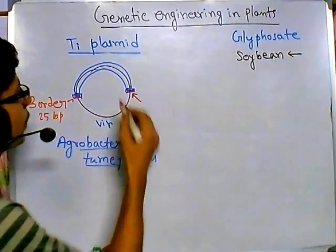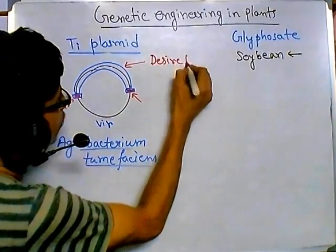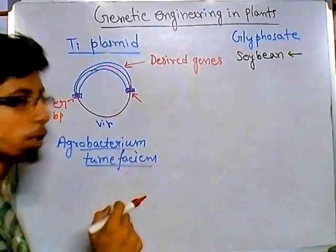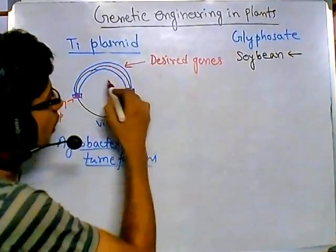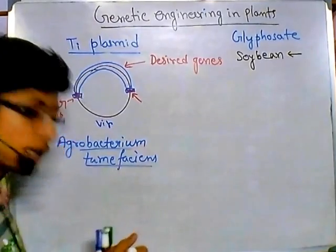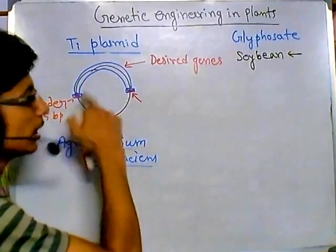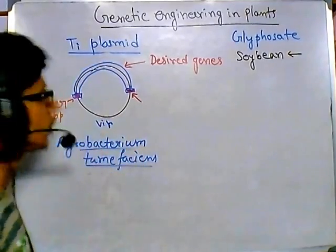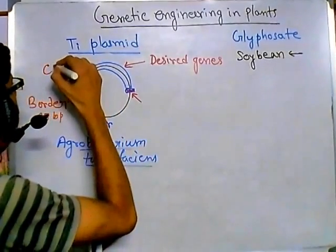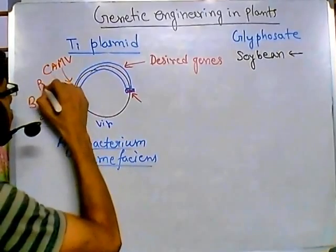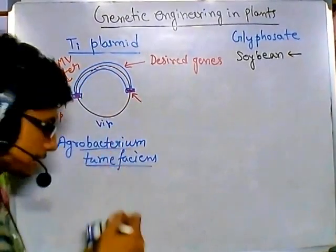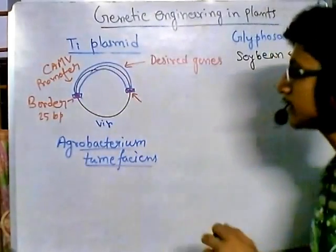Between the vir and T regions there are distinguishing regions called borders — 25 base pair sequences present on both sides. We place our desired gene between these borders. Along with the desired gene we also add a strong promoter, because we want this gene to be transcribed and translated into protein products inside a eukaryotic system like a plant. We use the Cauliflower Mosaic Virus — CaMV — promoter, which acts as a strong promoter in plant cells.